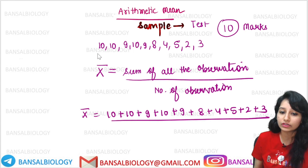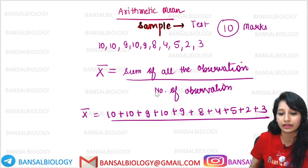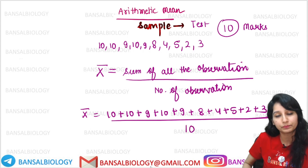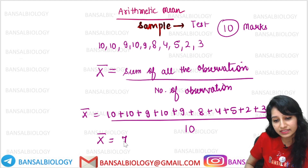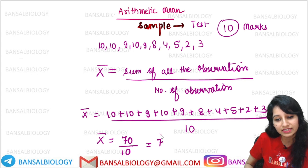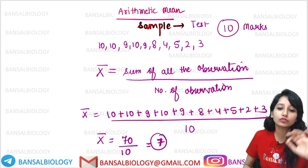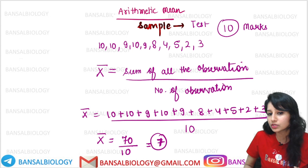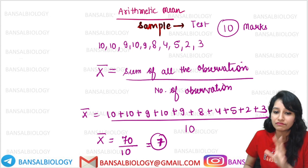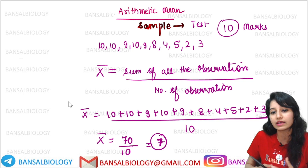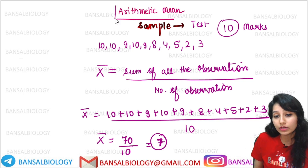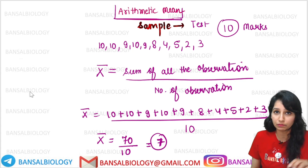Now I will count the total number of observations: 1, 2, 3, 4, 5, 6, 7, 8, 9, 10. The total number is 10. If we add the above values, the sum comes to 70. So 70 upon 10 gives the mean as 7. So on average, my students have scored 7 marks. The average of my class is 7. This is called Arithmetic Mean.